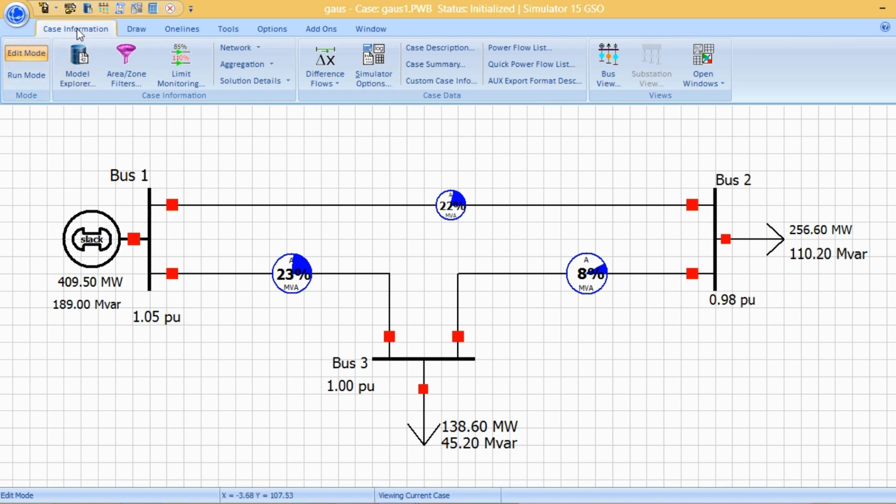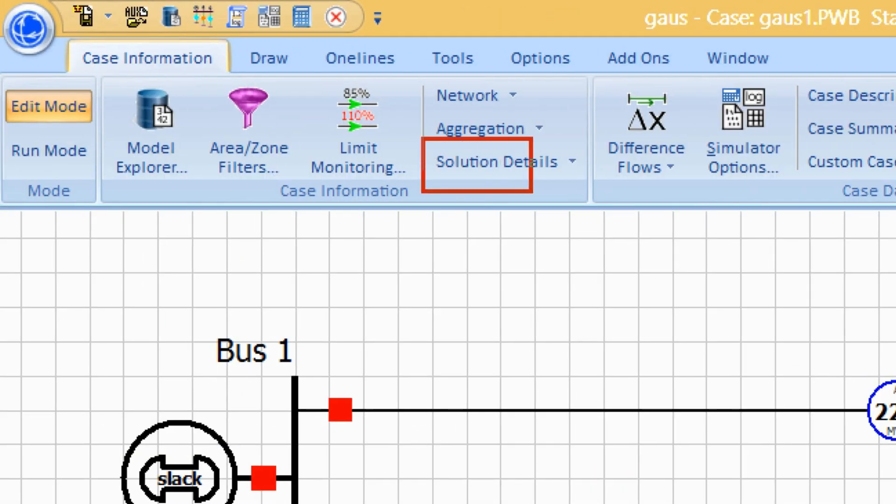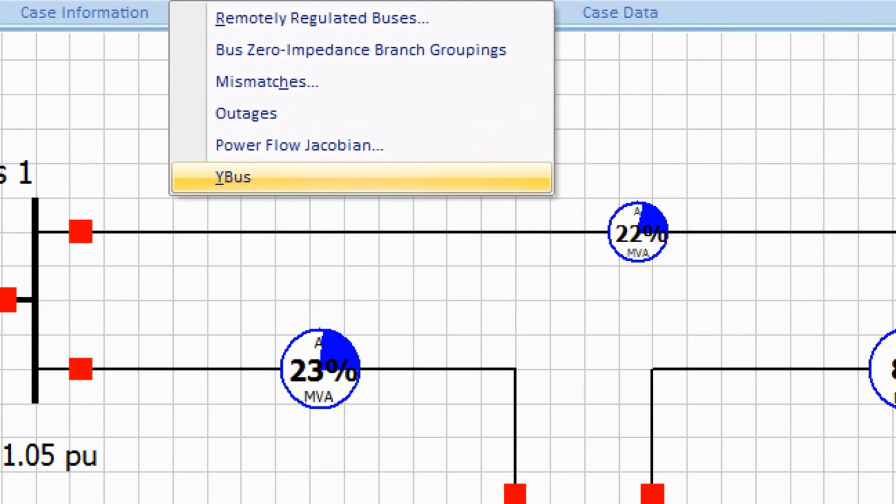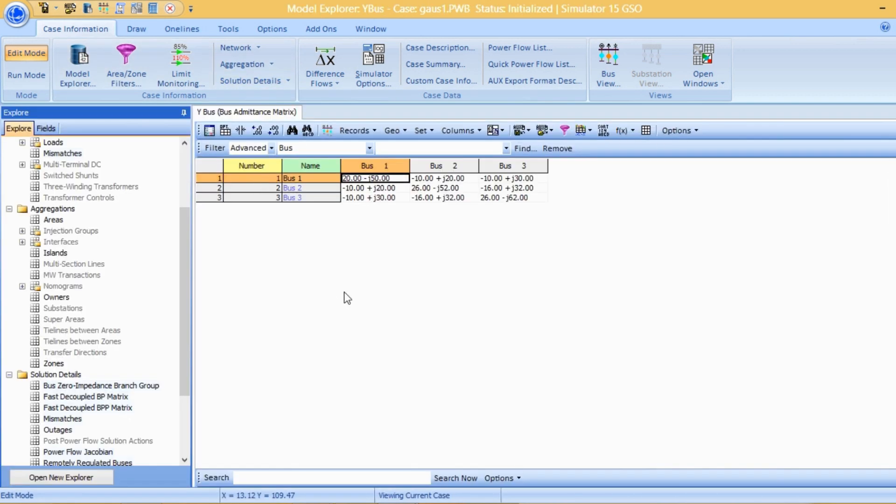Just go to Case Information, then go to Solution Details, and then click on Y Bus. When you click on Y Bus, it will show you the admittance matrix of the system.